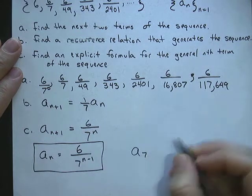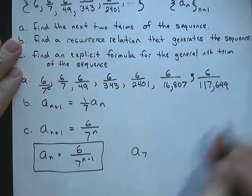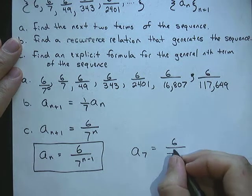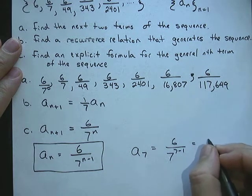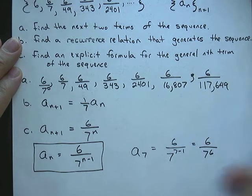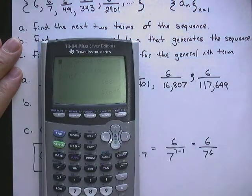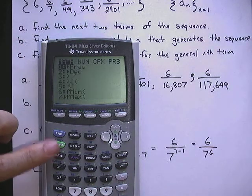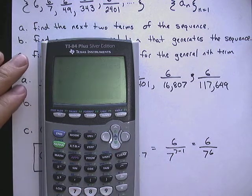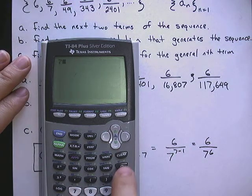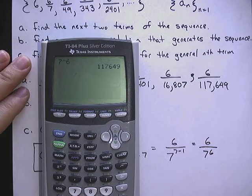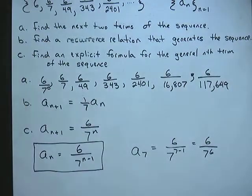So a sub 7, which should be this term right here, is equal to 6 over 7 to the 7 minus 1. And that is 6 over 7 to the 6th. Type that into our calculator. 6 divided by 7 to the 6th. They might not do that for us. So let's just look at the denominator. So 7 to the 6th power. Let's see if it's confirmed that's the same denominator. And it is. So that's your explicit formula.